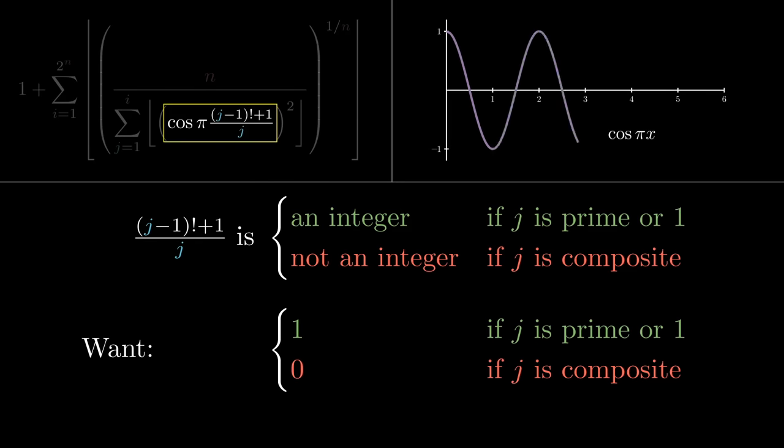Let's see why this works. Here's a plot of cosine of pi x. It hits its maximum value of positive 1 at 0, 2, 4, all the even integers. And it hits its minimum value of negative 1 at the odd integers. So when x is an integer, cosine pi x is either negative 1 or positive 1. And when x is not an integer, cosine pi x is strictly between negative 1 and positive 1.